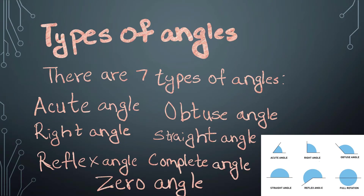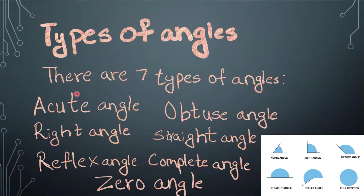Types of Angles. There are seven types of angles: Acute Angle, Obtuse Angle, Right Angle, Straight Angle, Reflex Angle, Complete Angle, and Zero Angle.